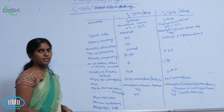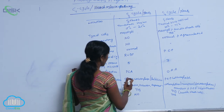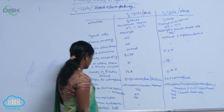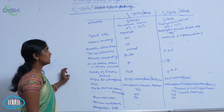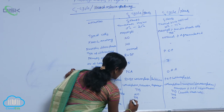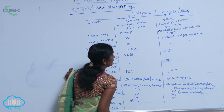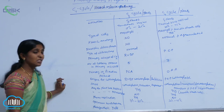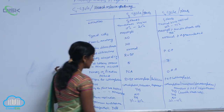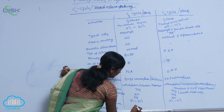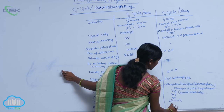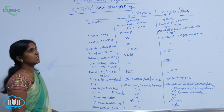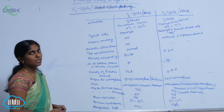Photorespiration is found in the C3 cycle — yes. It is absent in the C4 cycle. The optimum temperature for C3 is 15 to 25 degrees, while C4 requires 30 to 45 degrees. Photosynthetic yield is low in C3 plants compared to C4 plants, where it is high. These are the key differences between C3 and C4 cycles.